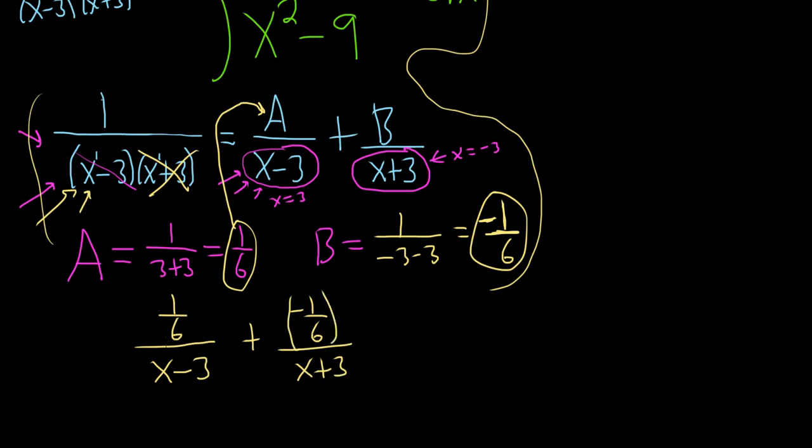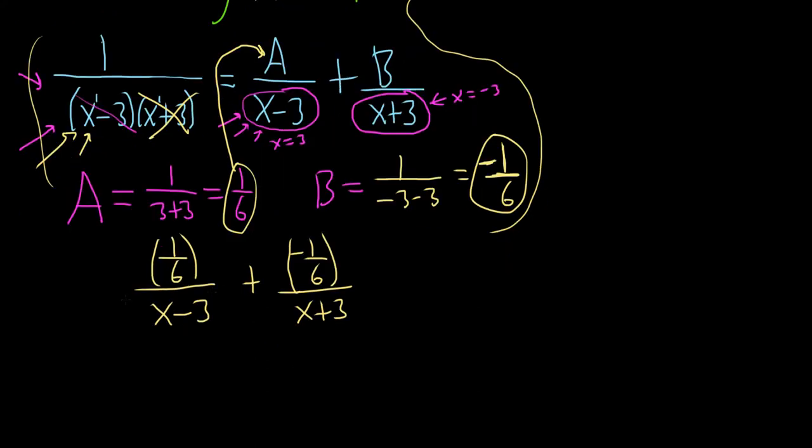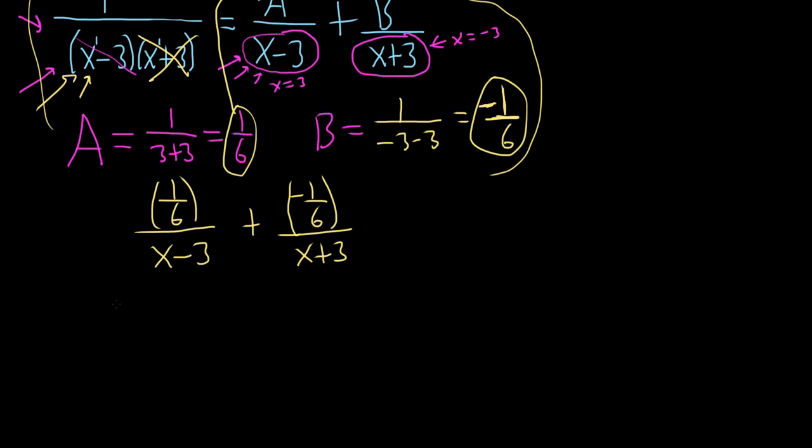However, no one actually writes it like this, because this is not useful to us. So the idea is we pull out the 1 sixth and we pull out the negative 1 sixth. And then we just integrate each piece. So ideally, we write it like this: 1 sixth integral 1 over x minus 3 dx minus 1 sixth integral 1 over x plus 3 dx.